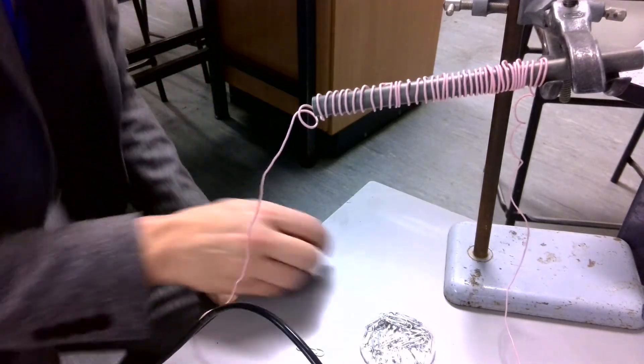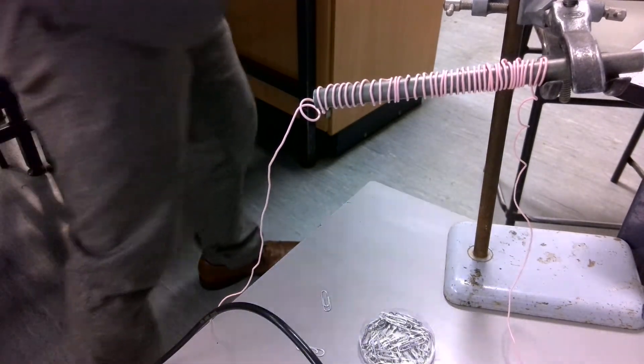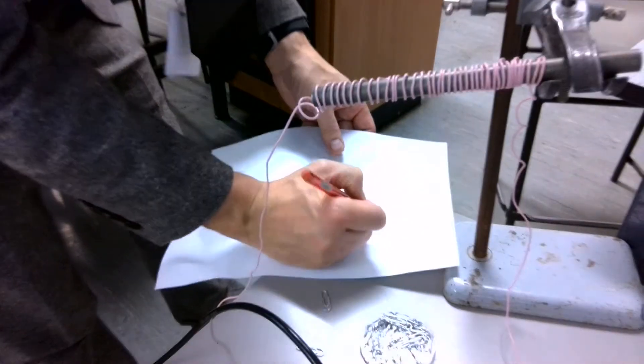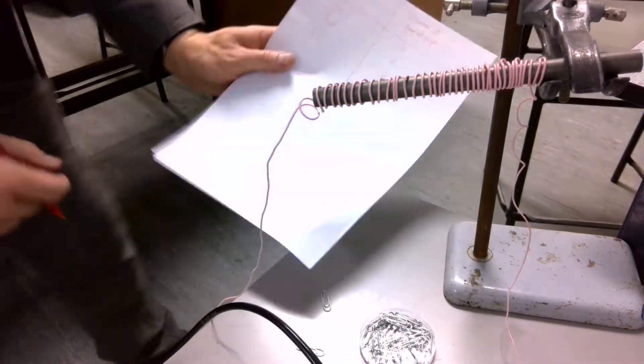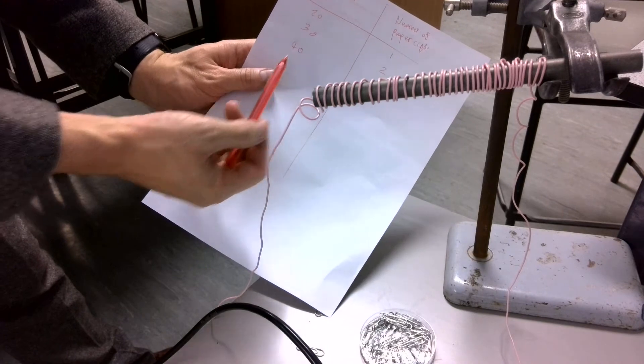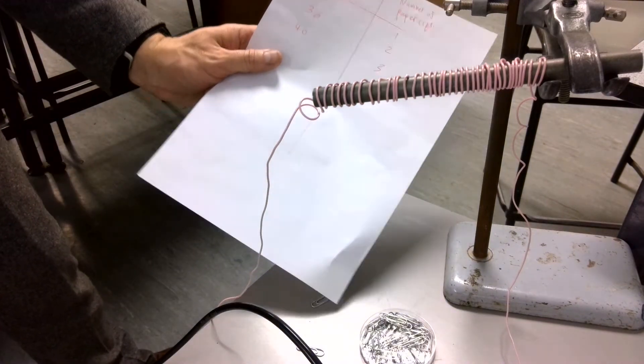We'll do one more, see how we get on. So I get my data, so I've got three. And you can see the data, so one, two, three, twenty, thirty, forty, they're looking directly proportional as well.